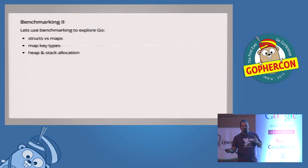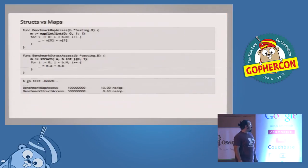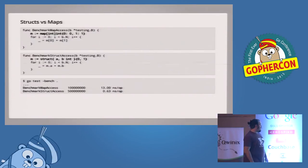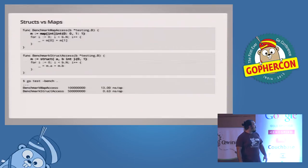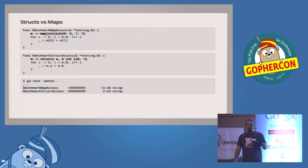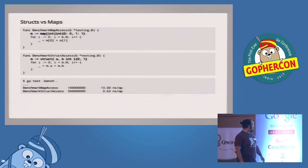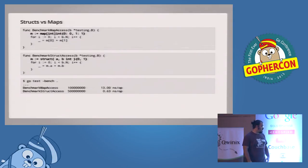Structs versus maps — this is a big bugbear of mine. Go has structs and a lot of people use maps instead, coming from dynamic languages where everything is a map, like JavaScript and Python where even objects are essentially maps. They think: 'I don't know exactly what this thing is going to look like, I need some kind of heterogeneous data storage, so I'll just use a map.' We can see that a map from int to int versus a struct of basically some ints — looping over them and adding the two ints together — the struct is about 25 times faster than the map.